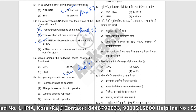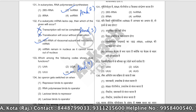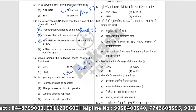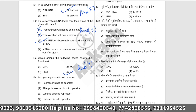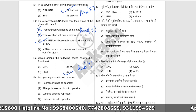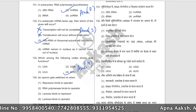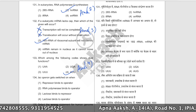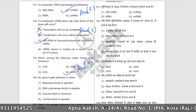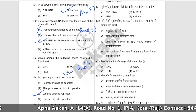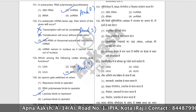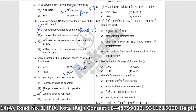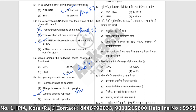Lac operon gets switched on when? The lac operon gets switched on when lactose binds to the repressor protein, causing the repressor to detach from the operator site. This frees the operator so RNA polymerase can transcribe the structural genes. The correct answer is option number three.